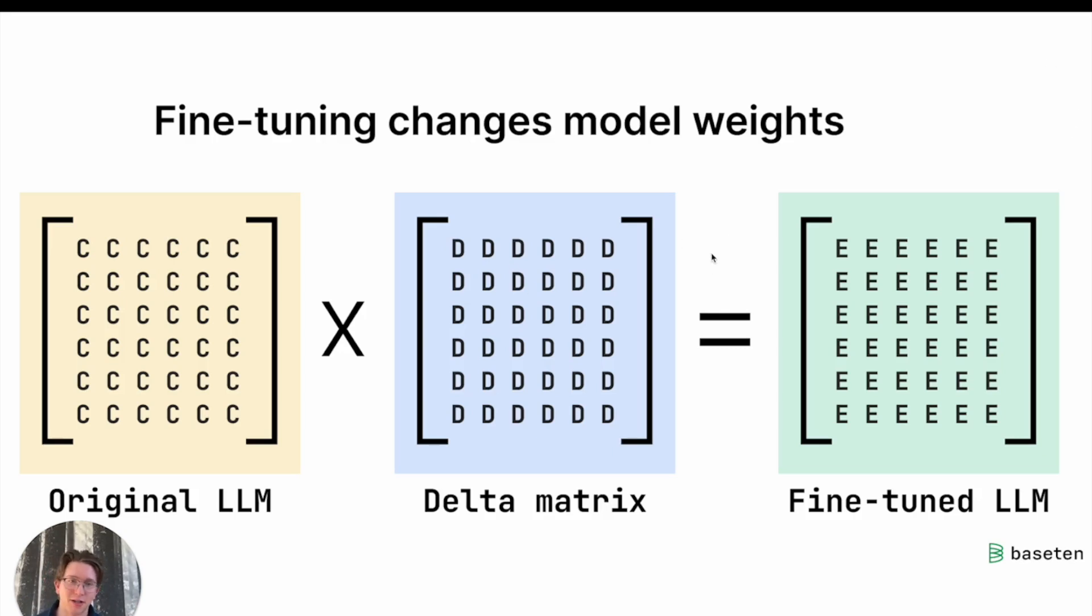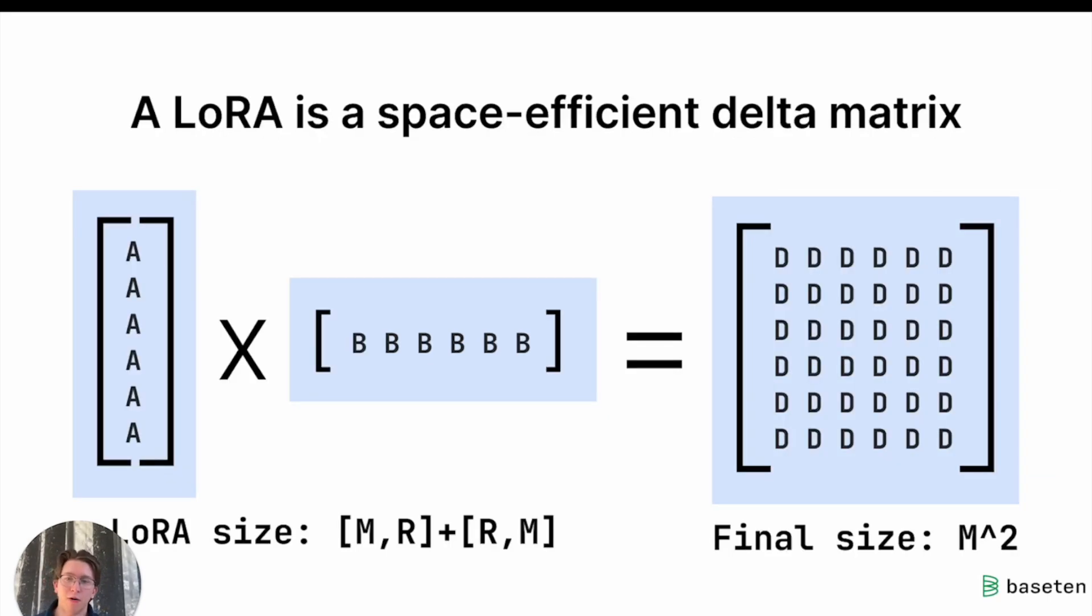Because the issue with this delta matrix and this output fine-tuned LLM, it's just as big as the original. It's billions of parameters, many gigabytes to store and serve. Well, LoRa's a low rank, which is where most of the letters in LoRa come from, just means that our matrix is going to be a lot skinnier in one dimension.